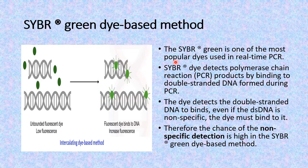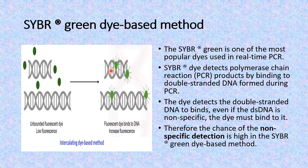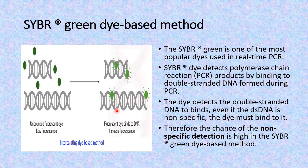The most widely used or most popular dye used in this method is the SYBR Green dye. SYBR is basically the registered name for this dye, which binds to the double helical structure of the DNA molecule. Once it is in the bound state with the double helical structure, it fluoresces. So more the number of amplicons, greater will be the fluorescence of the system. In this way, we can detect the double-stranded DNA molecule that is produced or present in the system. But the main problem with this is that SYBR Green dye is nonspecific.